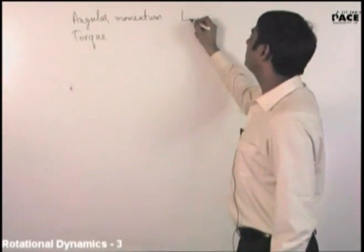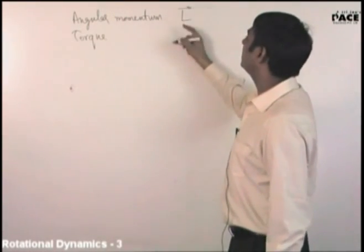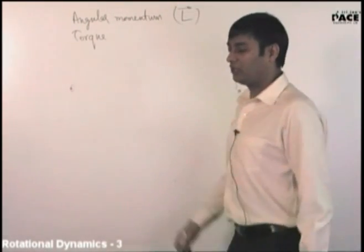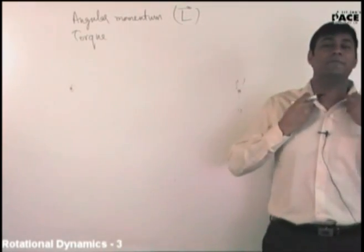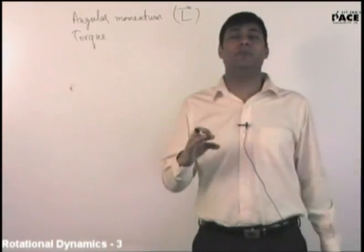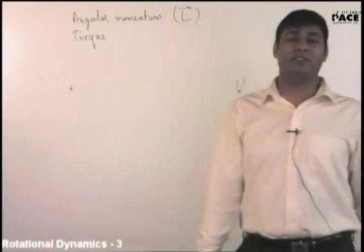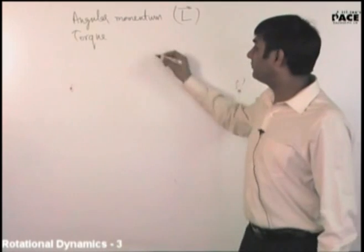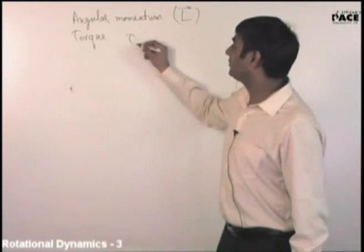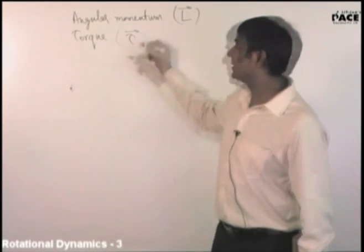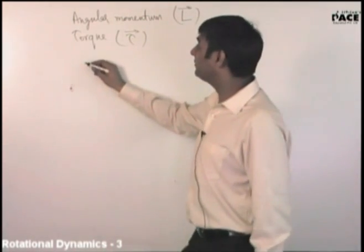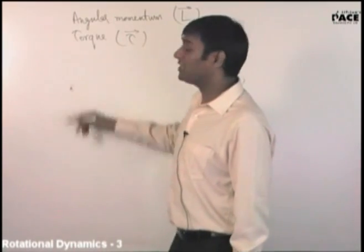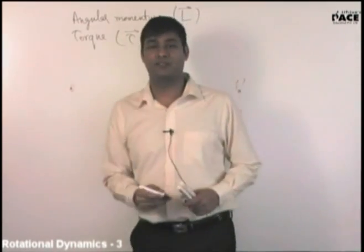Angular momentum — the symbol generally is L. Like for linear momentum we use the symbol P, for angular momentum the symbol used is L, and for torque you have tau. The third thing we will learn is rotational dynamics.